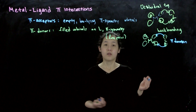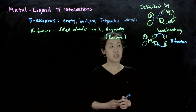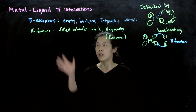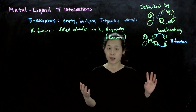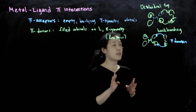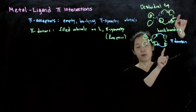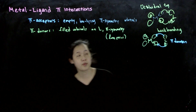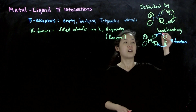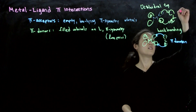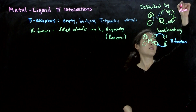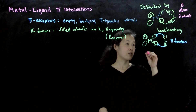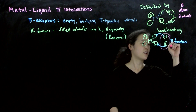When we're talking about donation or accepting, donation is from ligand to the metal, and acceptor is metal to ligand. The reason why these two types of ligands end up with different effects on our d-orbital splitting, our delta, is because of where the energies of these pi-symmetry orbitals lie. For empty orbitals, they lie above the energy of the d orbitals. And for these filled pi-donor orbitals, the energy is below.